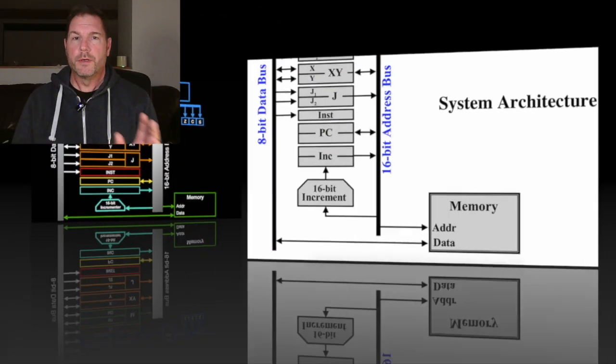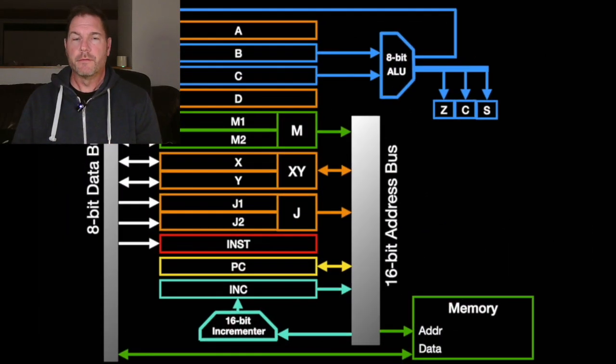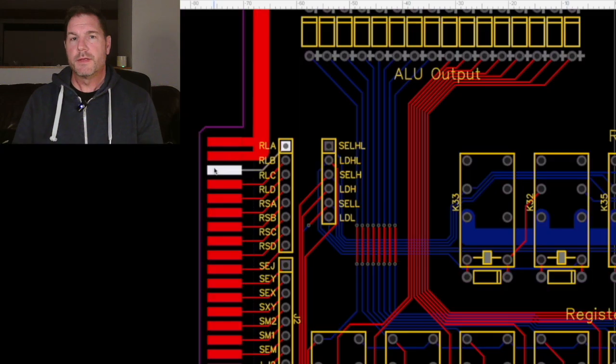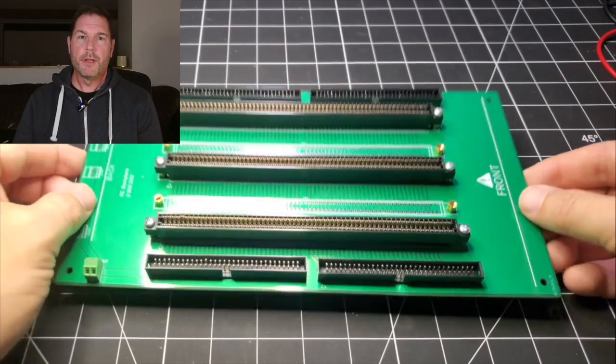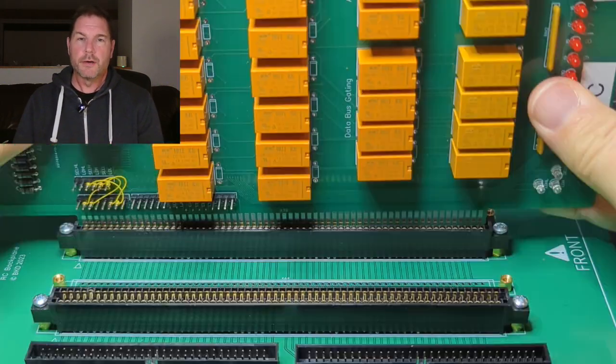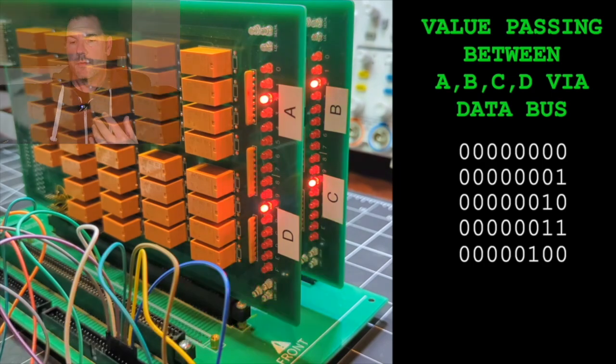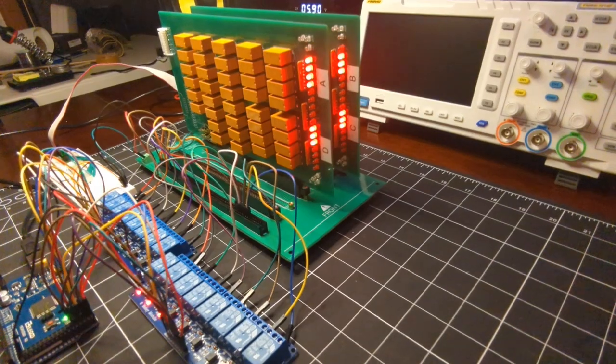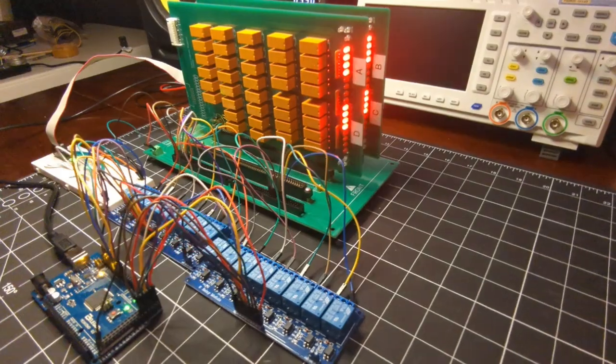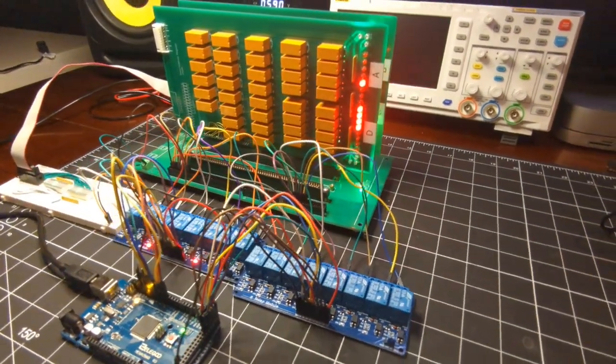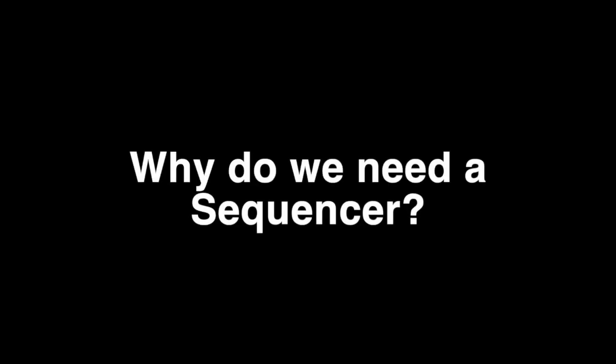In the previous video we touched on the architecture that's courtesy of Dr. Harry Porter, as well as a new register and backplane design using an edge card connector. So after many hours of testing it's looking like everything is running great and I'm now on to the next card, which is the sequencer. Before I delve into the design of the sequencer I'm going to answer a question I had to ask myself when I started this out: why do we need a sequencer?